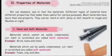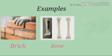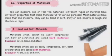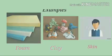Let us see examples of hard and soft materials. Materials which cannot be easily compressed, cut, bent or scratched are called hard materials — for example, brick, bone and steel. Materials which can be easily compressed, cut, bent or scratched are called soft materials — for example, foam, clay and skin.